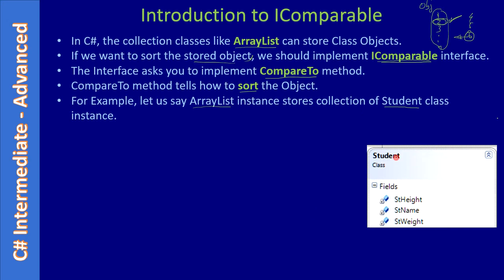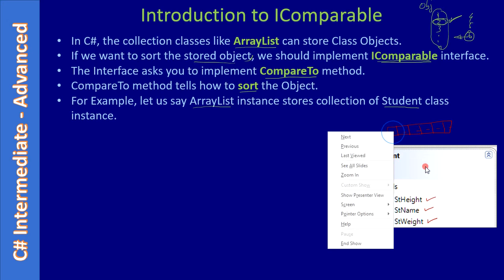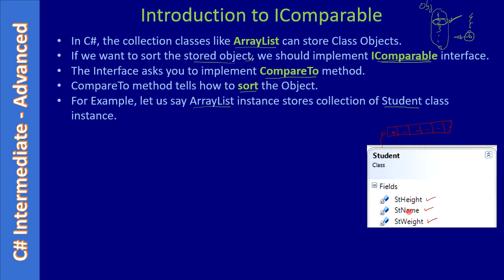The Student class has data members like student height, name, and weight. The moment you call ArrayList.Sort, since ArrayList has instances of the Student class, each slot will have a student represented by height, name, and weight. If we want to sort, we need to decide: do we want to sort based on height, based on student name, or based on weight? That decision is educated by the CompareTo method, which tells ArrayList how to sort the student collection.